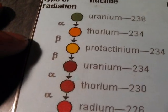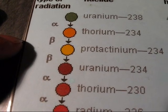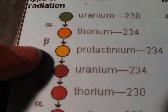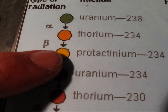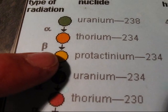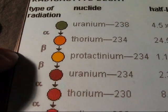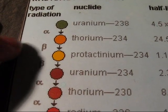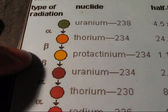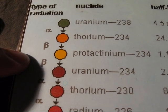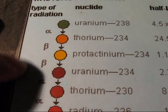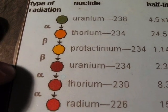The problem is that sometimes the daughter nucleus — the decay product — is in an excited state. The excitation energy will have to be given off using a quantum packet of energy, and that is a gamma ray.